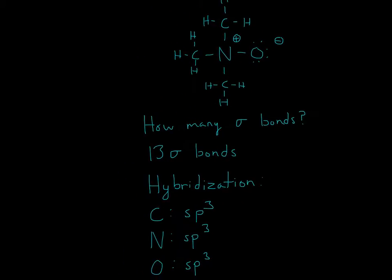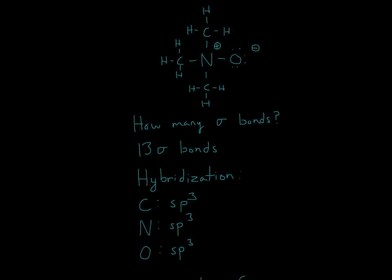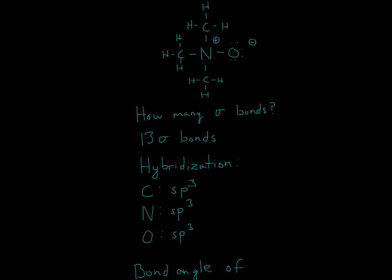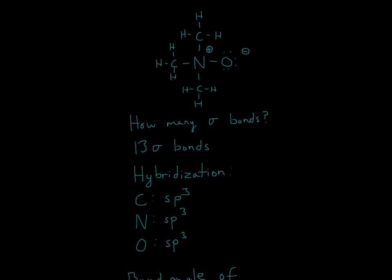Continuing on, what is the hybridization of each one of these atoms? For carbon, for hybridization, all you do is count up the bonds, and then the exponents should equal the bonds. For example, carbon has 1, 2, 3, 4 bonds. So the exponents should add up to 4. So it's going to be SP3. 1 plus 3 is 4, therefore it's SP3.